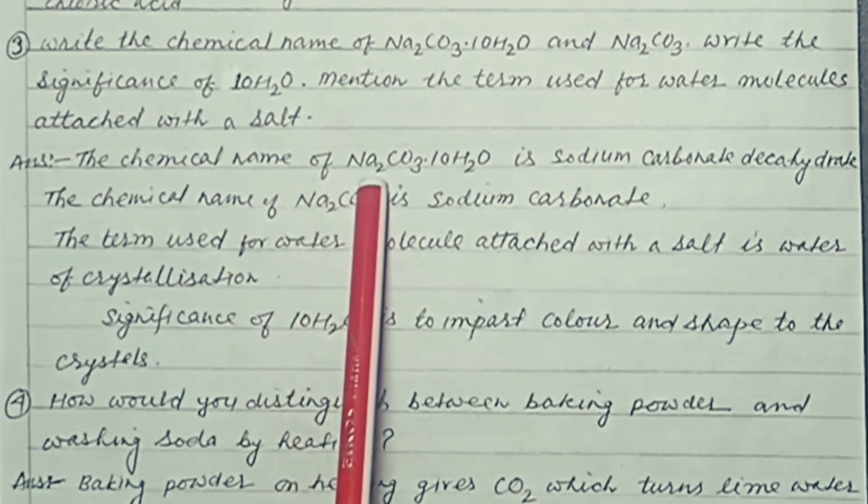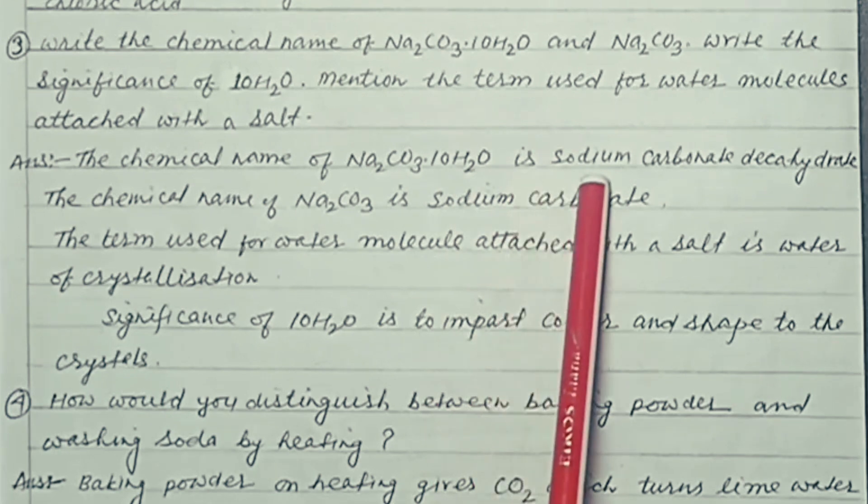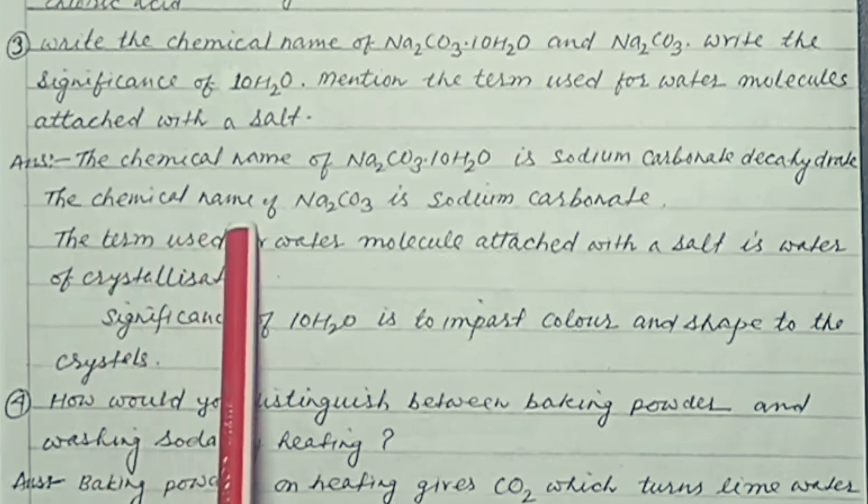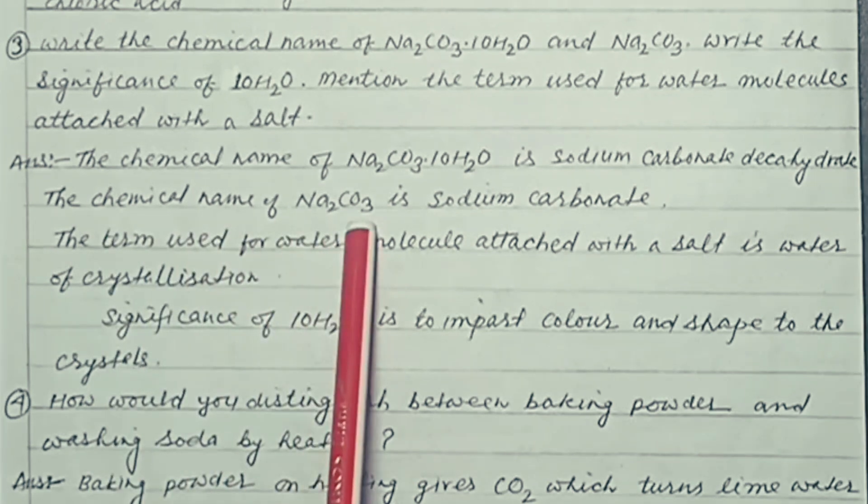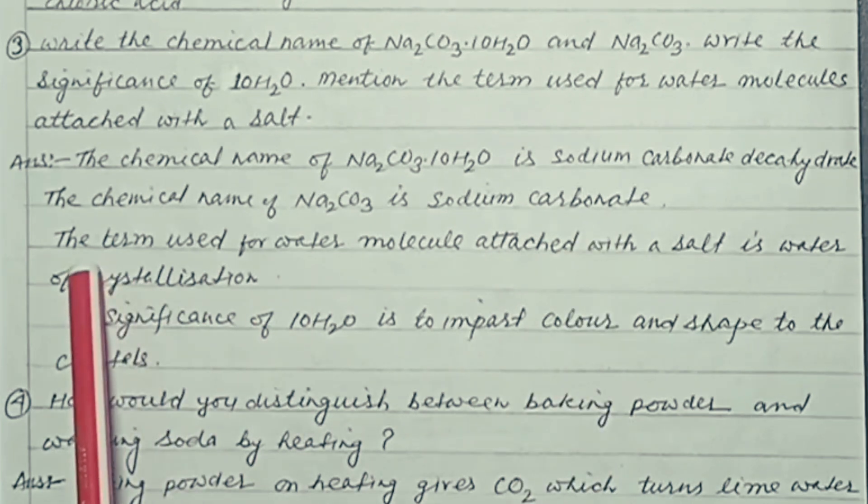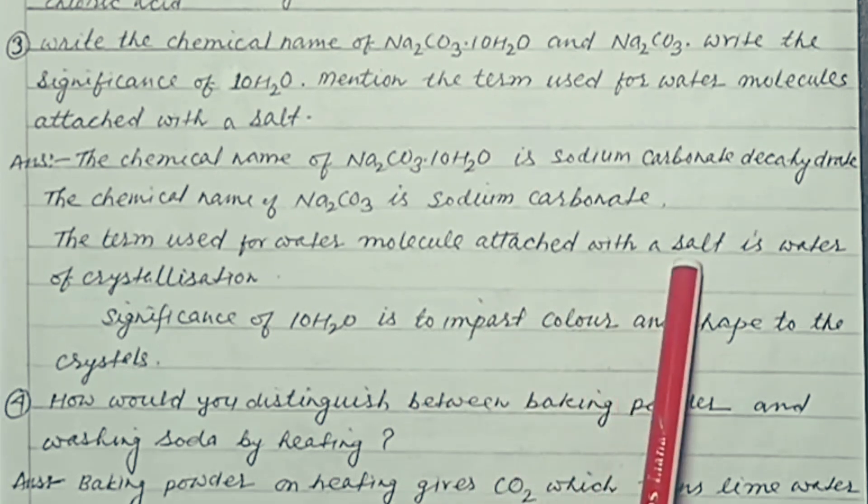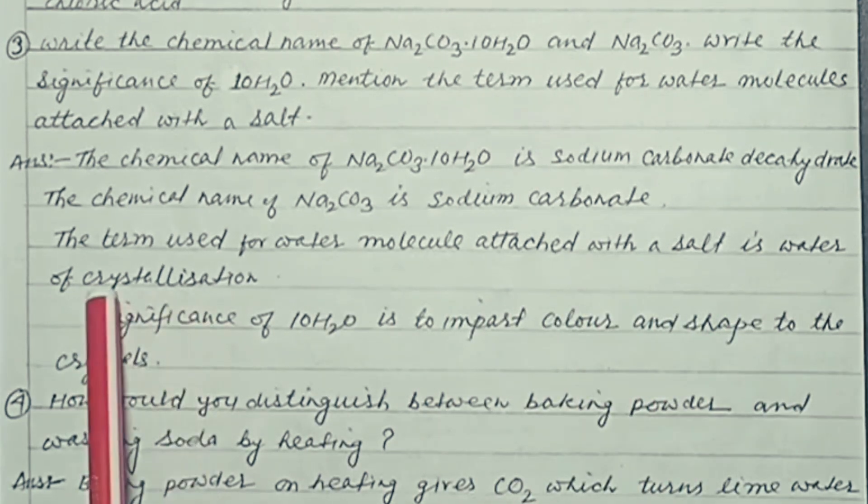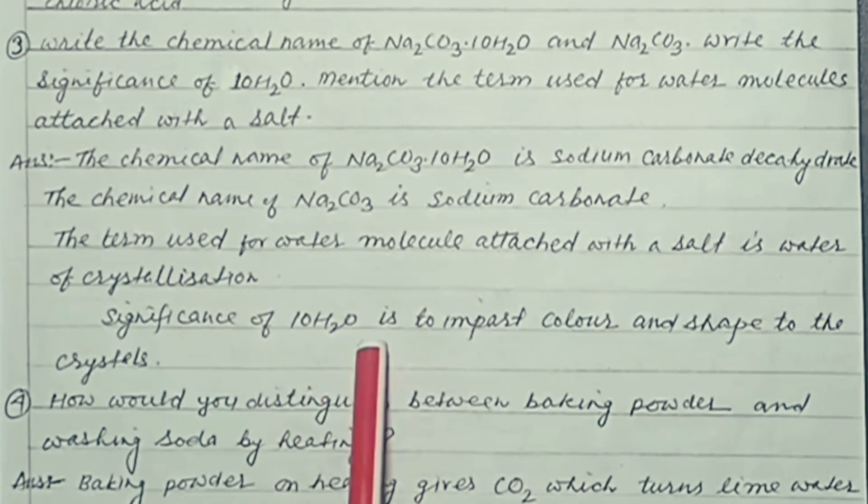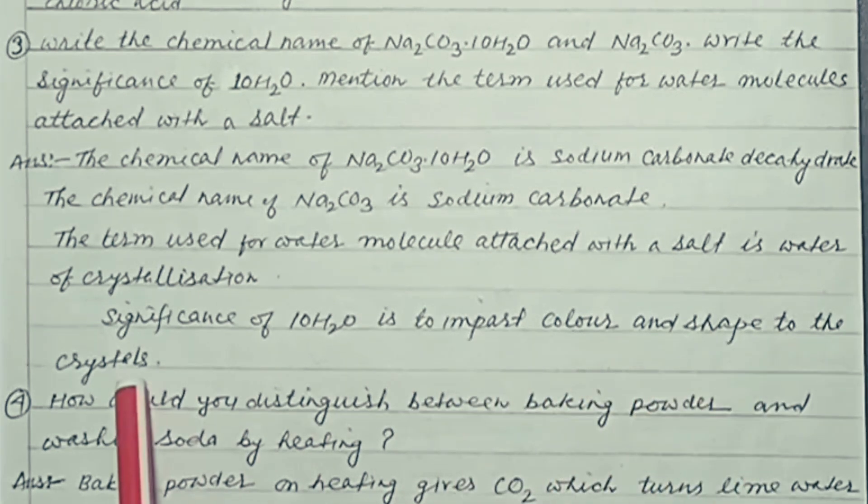The chemical name of Na2CO3.10H2O is sodium carbonate decahydrate. The chemical name of Na2CO3 is sodium carbonate. The term used for water molecules attached with a salt is water of crystallization. Significance of 10H2O is to impart color and shape to the crystals.